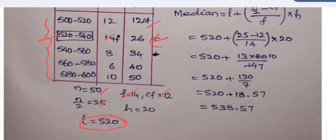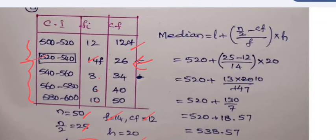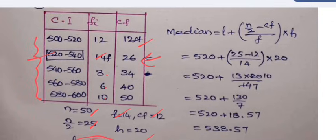Substituting all these values in the formula to find the median: Median is equal to l plus n by 2 minus cf by f into h. This is the formula. And here l is 520, n by 2 is 25, cf is 12, f is 14, h is 20.